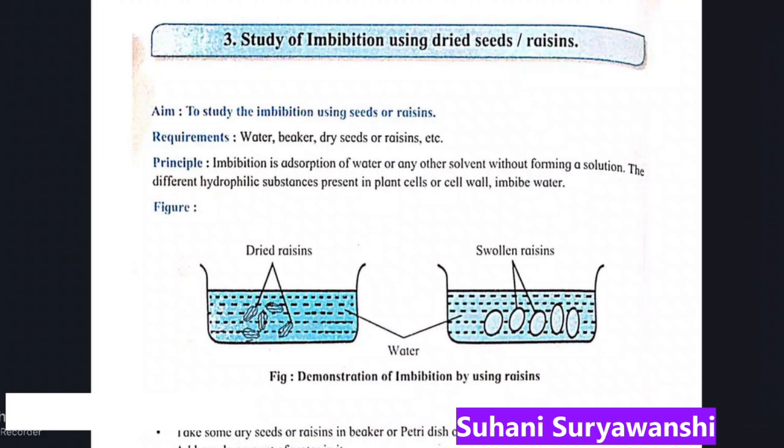Hello my dear friends, welcome to S-plus education. Today we are going to cover 12th Biology practical book answers for Maharashtra. So Section B, Experiment 3: you are going to study imbibition using dried seeds or resins.